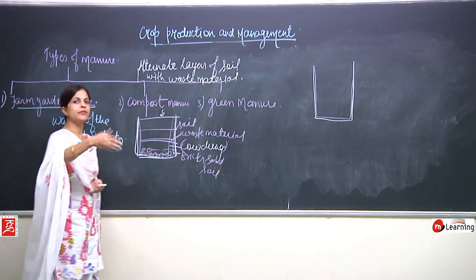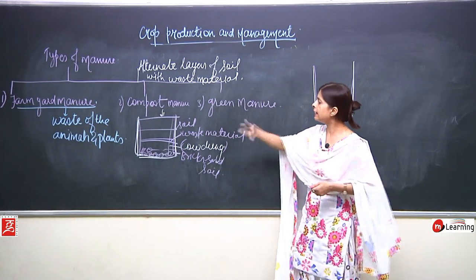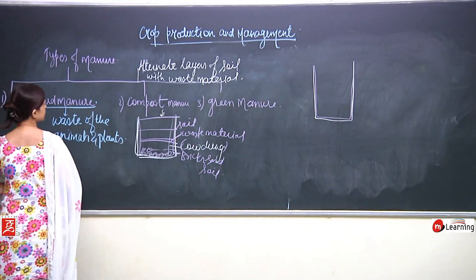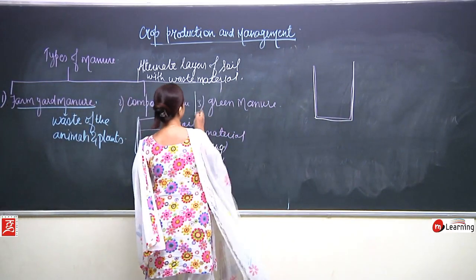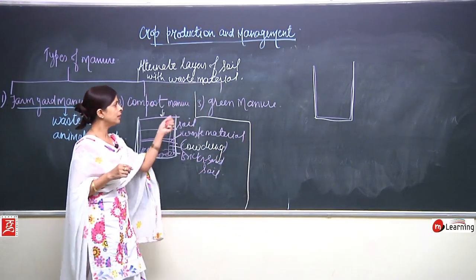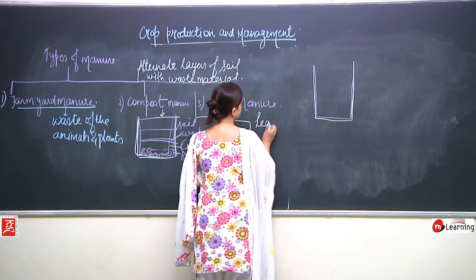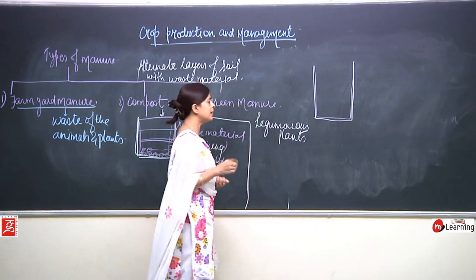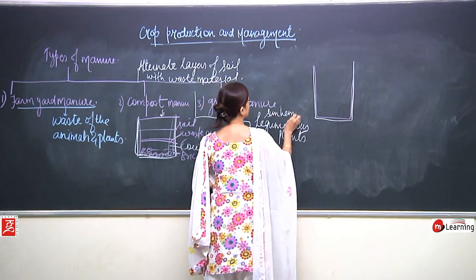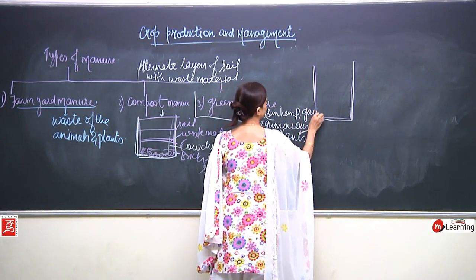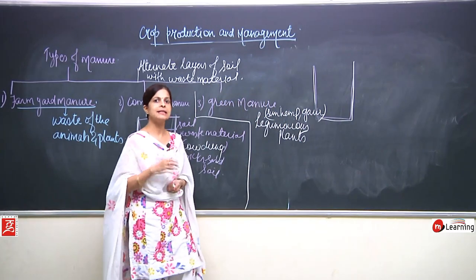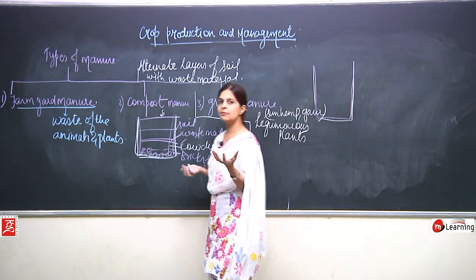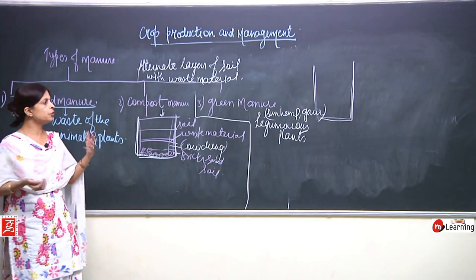After a few days, the matter is removed and the manure is formed. The third type is green manure. For making green manure, some leguminous plants are used.